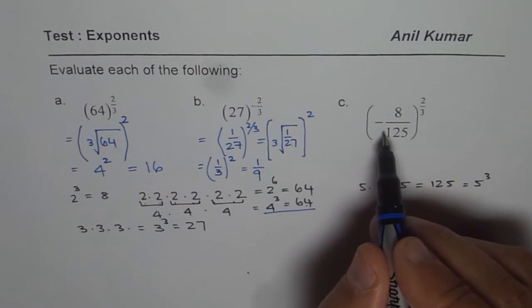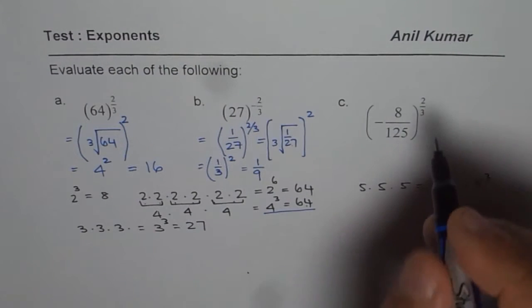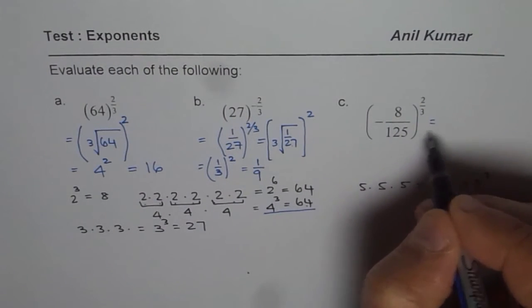Now, here I have taken all three examples with cube root so that the concept becomes clear. Now, let's get to this one, which is 8 over 125. What should you do? First, do the cube root.